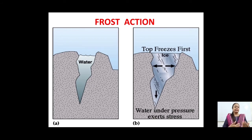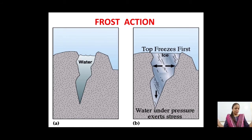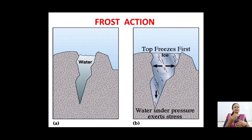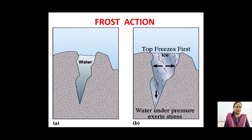This freeze-thaw process happens every day. During the daytime the ice melts and pressure is released; at night the water freezes again and pressure builds up and is exerted. So alternate freeze and thaw — where thaw means to melt — leads to the breaking of rock into smaller pieces. This is how frost action leads to mechanical or physical weathering.